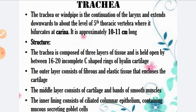The trachea is composed of three layers of tissue and is held open by between 16 to 20 incomplete C-shaped rings of hyaline cartilage. The most important feature of the trachea is that it has three layers of tissue. The important structural feature is that 16 to 20 incomplete C-shaped hyaline cartilage rings are present. The outer layer consists of fibrous and elastic tissue that encloses the cartilage.